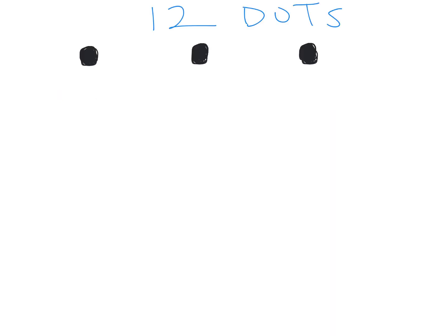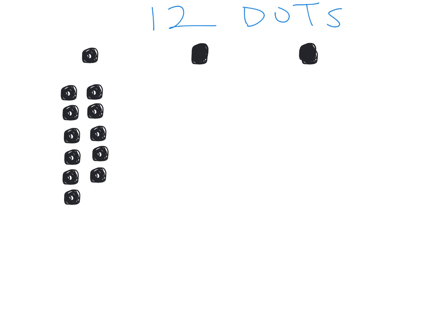Let's begin talking about factors and products. Say you have 12 dots — a stack of 12 dots — and you want to arrange those dots into the shape of an enclosed rectangle. One choice is to arrange them one-two, one-two, one-two, one-two, one-two, one-two. There's my little array, and it's a six by two array because six times two equals twelve.